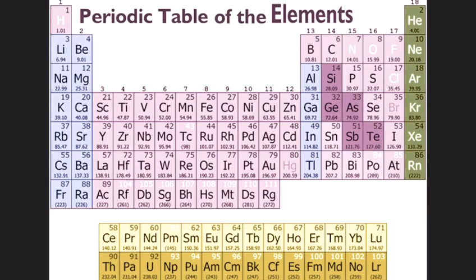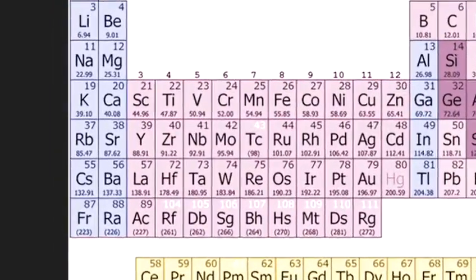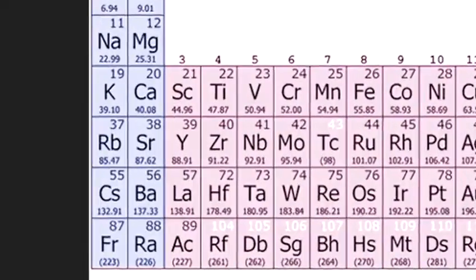For example, returning to the alkali metals, as you progress down group one, from sodium to potassium and so forth, the chemical reactivity increases. Therefore, something like cesium, near the bottom of the group, is much more reactive than sodium at the top.